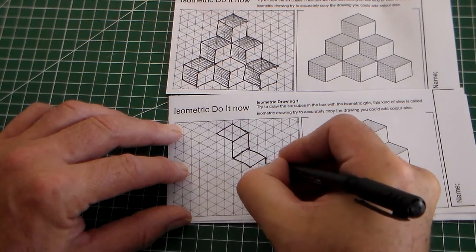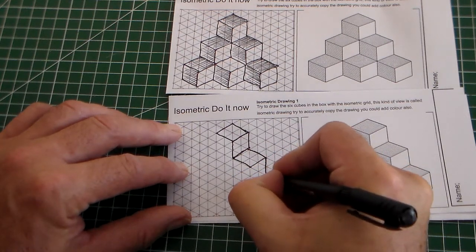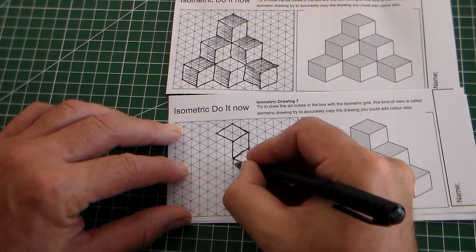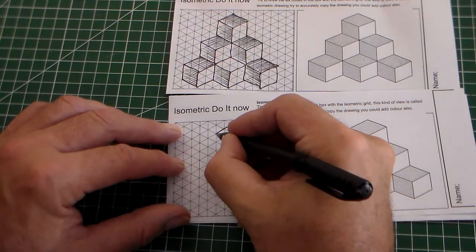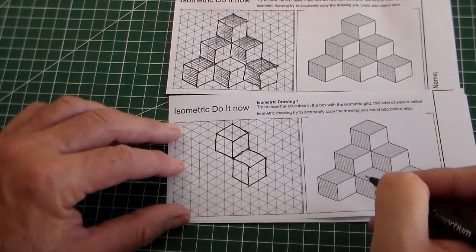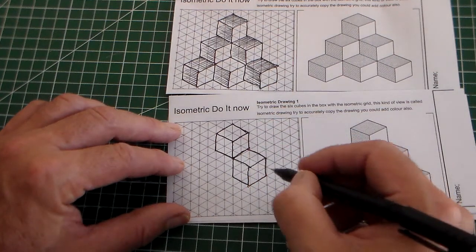Then if we come down and draw the next cube here, and finish drawing that cube. So you can see there, we've drawn one cube.